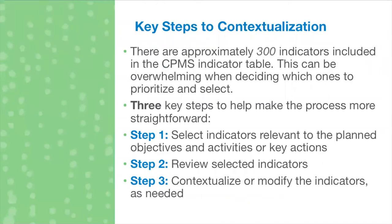There are three key steps to contextualizing the indicators. There are approximately 300 indicators in the extended list available online, which I know can be overwhelming when deciding which to prioritize. However, many of the indicators are similar in nature — for instance, many standards include an indicator related to identifying or putting into place a functional referral mechanism, or an indicator related to satisfaction with service provision. I would encourage you to modify them accordingly so you're not selecting similar indicators from your priority standards.